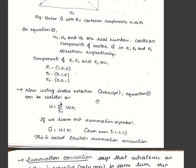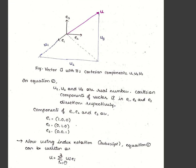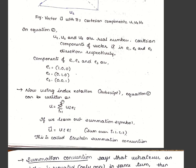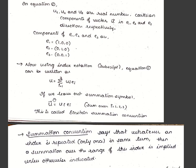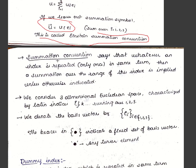Using index notation, we can write the vector equation using a summation: u = Σ(i=1 to 3) ui·ei, where i ranges from 1 to 3. If we drop the summation symbol, we get simply ui·ei. This is Einstein's summation convention: if an index is repeated twice in the same term, it implies summation over that index.